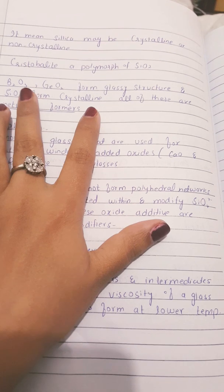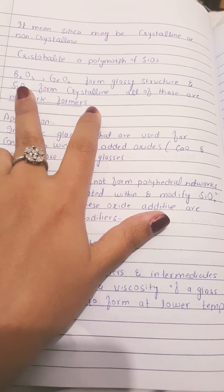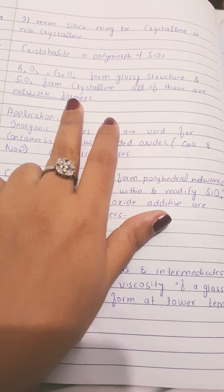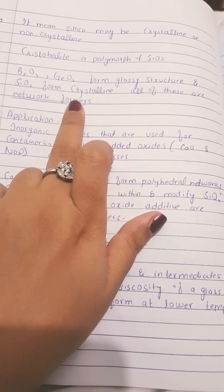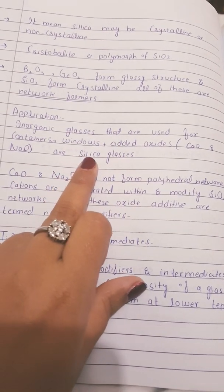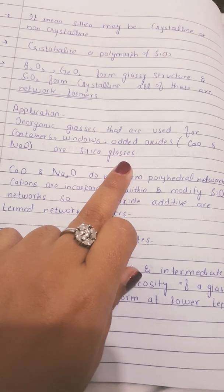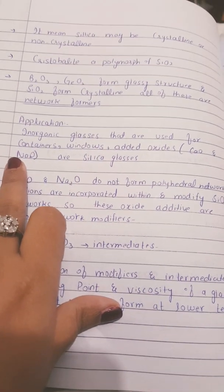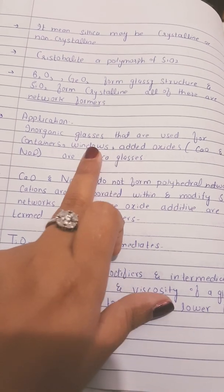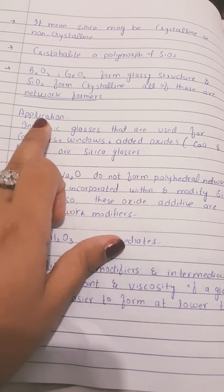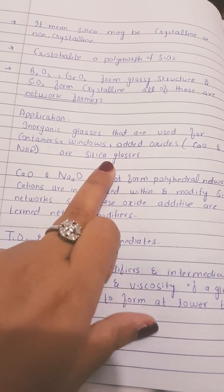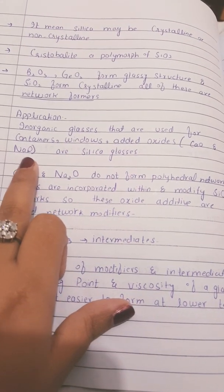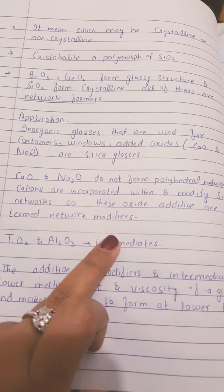Next we will talk about network formers, network modifiers, and intermediates. The oxides B₂O₃, GeO₂, and SiO₂ are network formers. When CaO and Na₂O oxides are added to silica glass, they are used to make windows and containers — this is the application of silica glasses. CaO and Na₂O are called network modifiers.